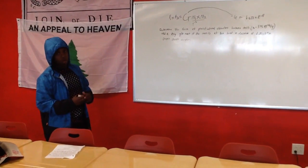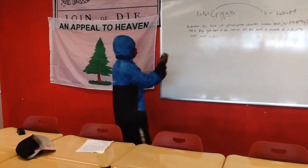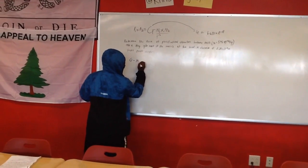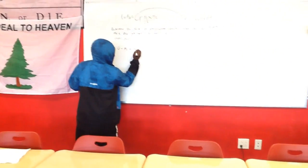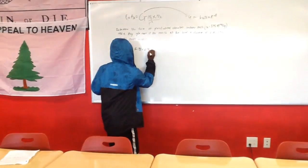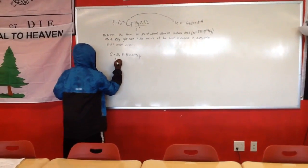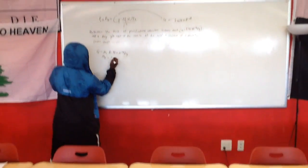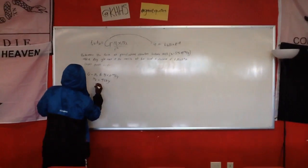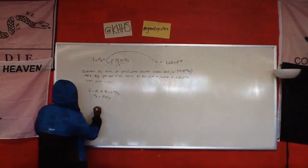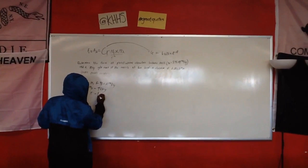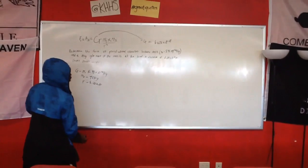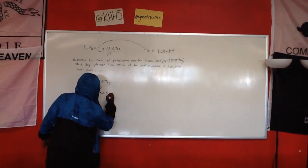We know, we will first write down the given. We are given that mass 1 is 5.98 times 10 to 24 kg, mass 2 is 70 kg, and the radius is 6.38 times 10 to 6 meters.